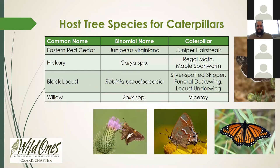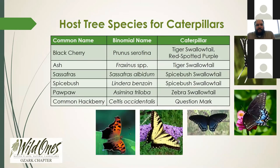What are some common host trees for caterpillars? Eastern red cedar is a host plant for the juniper hairstreak. Hickories are host plants for regal moths and maple spanworms. Willow trees are host plants for viceroys — a monarch mimic — which try to look like a monarch to get the benefits of deterring predators that know monarchs don't taste great. Black cherry is a host plant for the tiger swallowtail and red-spotted purple. Ash trees are another host plant for the tiger swallowtail. Spicebush swallowtails use northern spicebush and sassafras. Zebra swallowtails use pawpaws, and common hackberries provide nursery for question mark butterflies.